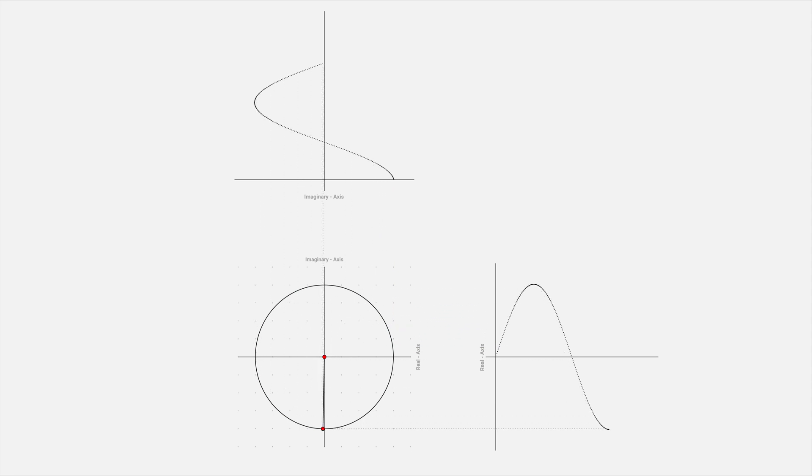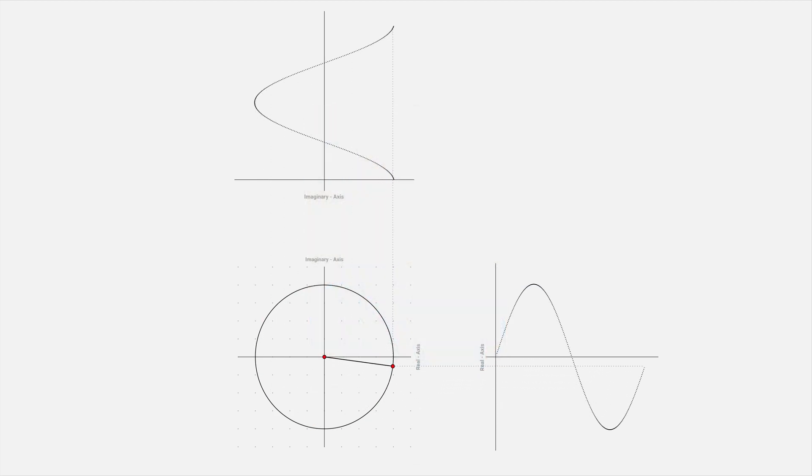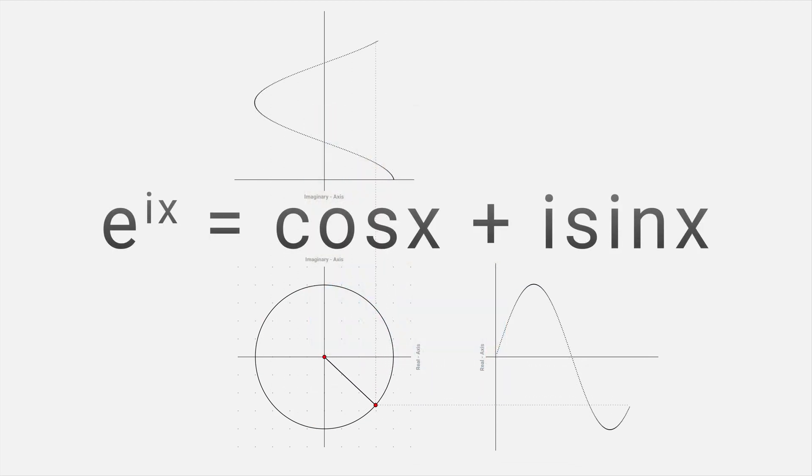This formula connects the exponential function and trigonometric functions in a surprising and amazing way. Euler's formula, named after the great mathematician, states that for any real number x, e raised to the power ix equals cos x plus i sin x.